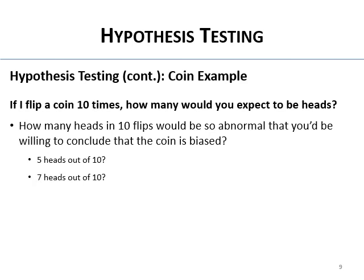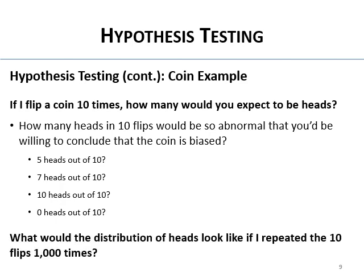What if I got zero heads? That's equally really unlikely — that's a two-tailed hypothesis, since I didn't say how the coin was biased, just that it is. What would the distribution of heads look like if you repeated those 10 flips a thousand times? It turns out it's our old friend the normal distribution.